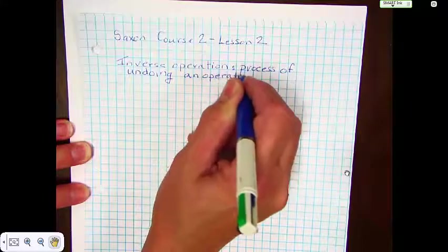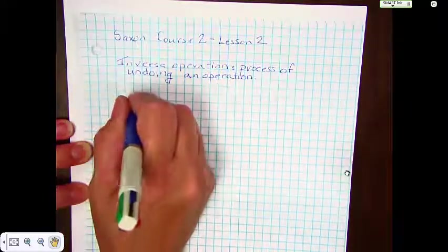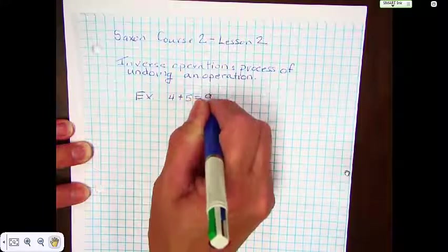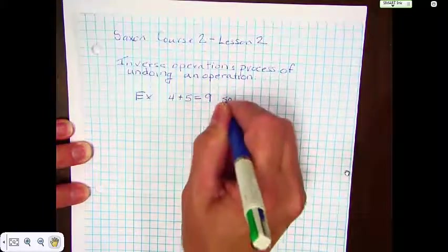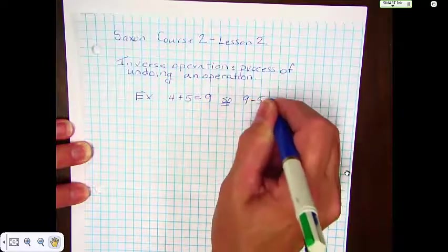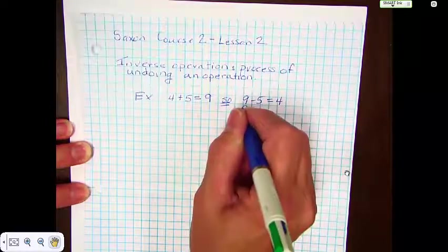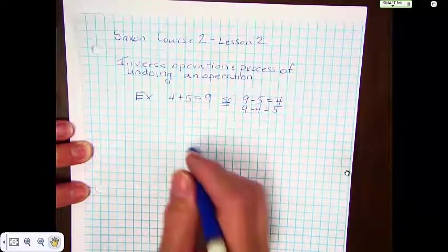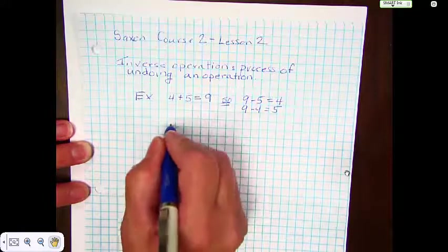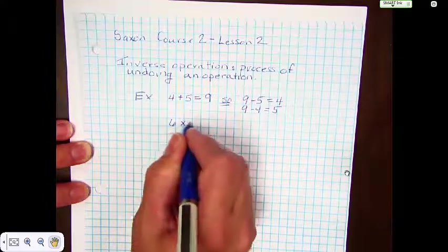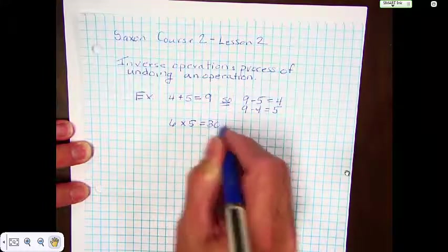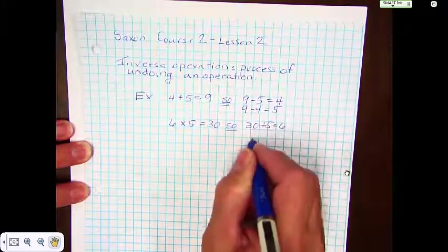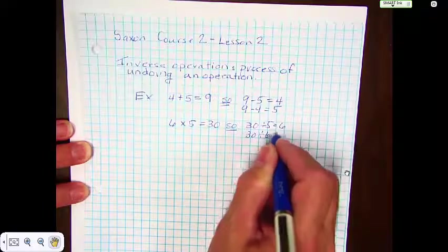I'm just going to give a couple quick examples. If you add 4 plus 5 and you get 9, then you can also take 9 minus 5 and that will equal 4, or you could take 9 minus 4 and that will equal 5. Addition and subtraction are opposites. Multiplication can be handled in the same way: 6 times 5 equals 30, so 30 divided by 5 equals 6, or 30 divided by 6 equals 5.